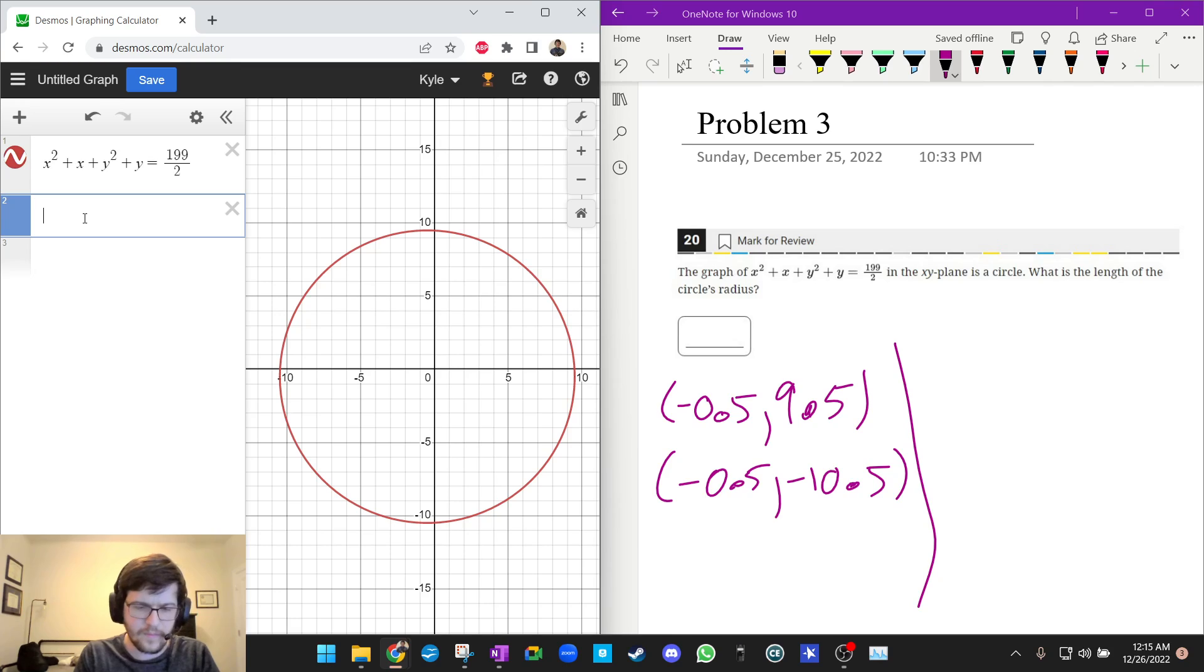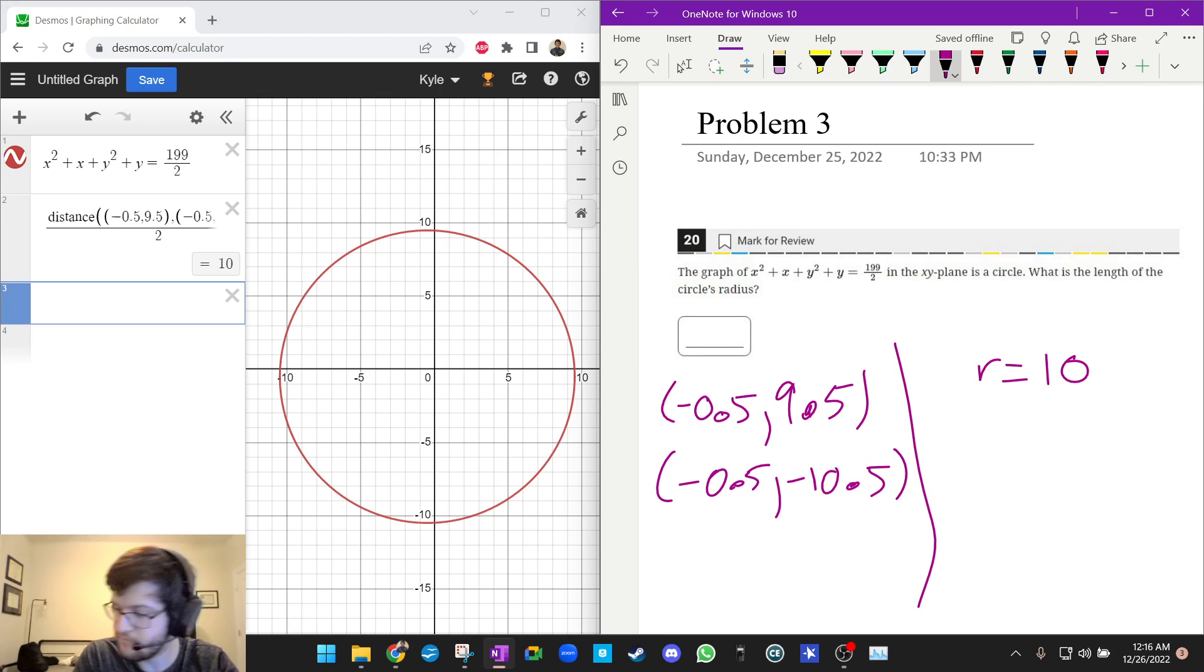And now to find the radius, I can do the distance between the two points. 9.5 and negative 0.5, negative 10.5. And I can divide that by 2. And I get a radius of 10. And that's the answer for that one. It's asking you what the length of the circle's radius is.